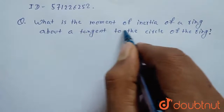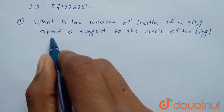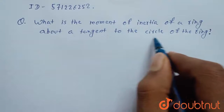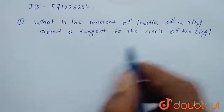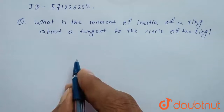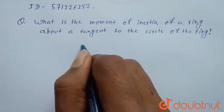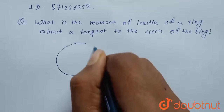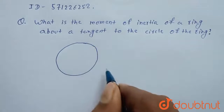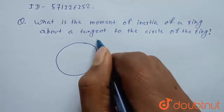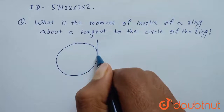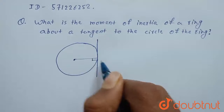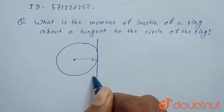What is the moment of inertia of a ring about a tangent to the circle of the ring? Suppose this is our ring — we have to find the moment of inertia of a ring about a tangent, let's say this tangent.